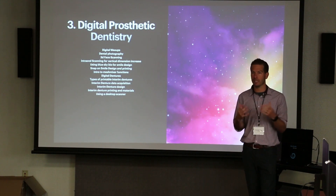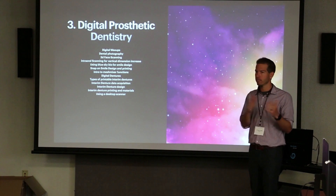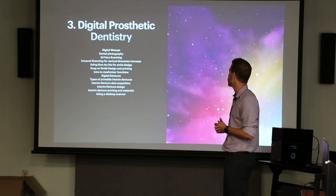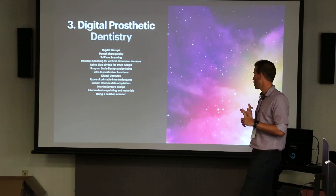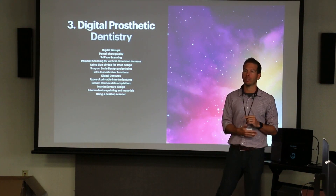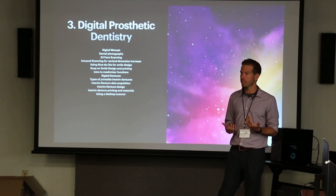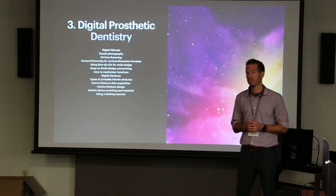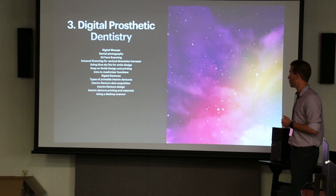The teeth end up where they need to be because I set them digitally — it's easier than sending impressions to a lab and having them set teeth off a model. For dentures, we're going to talk about the three different types of printable interims and their pros and cons, and how we get the data into the software. Dentures require scanning the vestibule, which involves more soft tissue, and soft tissue is more difficult to scan than an arch of teeth.